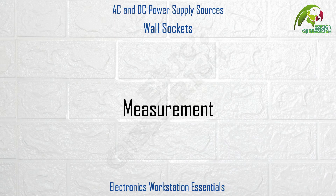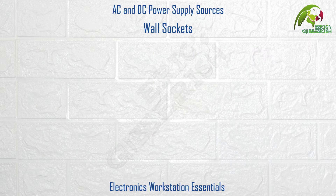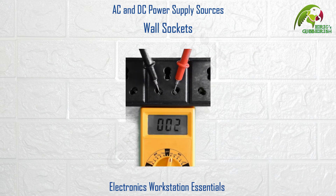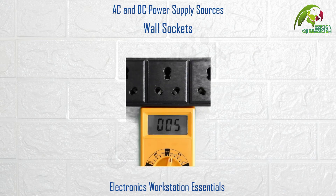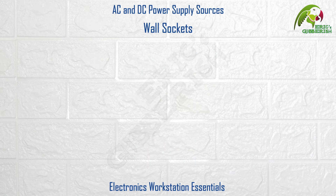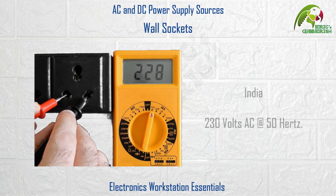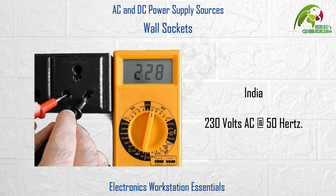Let's measure the wall socket voltage using a multimeter on the AC voltage mode. Note that AC power supplies have no polarity — positive and negative — and hence the probe polarity does not matter. That's pretty much the wall socket voltage available here in India, which is 230V AC at 50Hz.